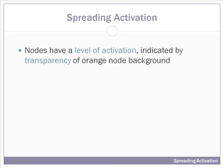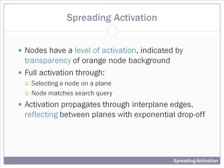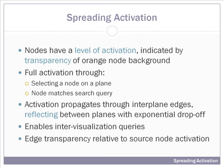With VisLink, we introduce the technique of spreading activation. Nodes have a level of activation that is indicated by the transparency of the orange node background. Nodes may be fully activated through selecting a node on a plane or if a node matches a search query. Fully activated nodes are also indicated by a green halo around the node edge. Node activation will propagate through interplane edges reflecting between planes with an exponential drop-off with each reflection. Fully activated nodes will propagate an edge to the opposite plane, and then that node will become activated but to a lesser extent. This enables inter-visualization queries. Edge transparency is relative to the source node activation.